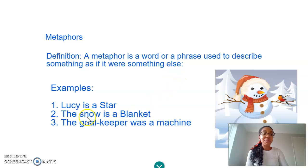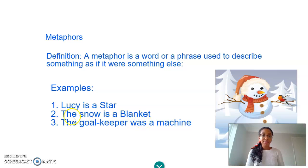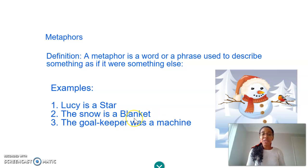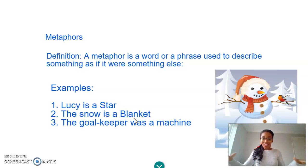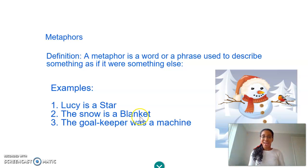We've got another example here: the snow is a blanket. So what's being described here? Yeah, it's the snow. And what are we comparing it to? A blanket — we're saying it is a blanket. So what picture do we have in our mind? We can see that the snow is covering everything, you can't see through it, it's just like a blanket. So you just see this blanket of snow, all white everywhere. And we can see the snowman here is enjoying the blanket of snow all around him.